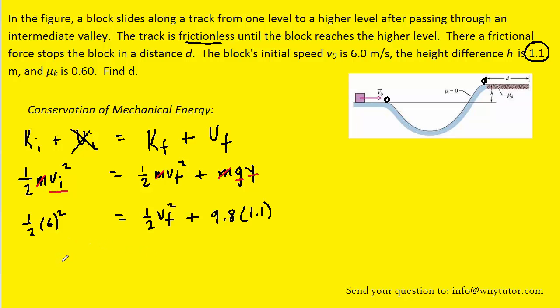So there are the known values substituted in. And when we solve for the final speed, we should get 3.8 meters per second. That is the speed of the box right before it hits the rough patch.